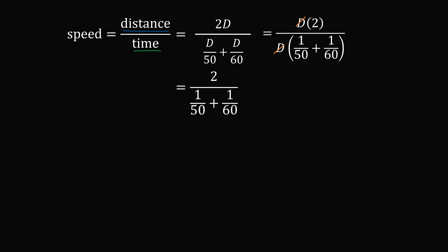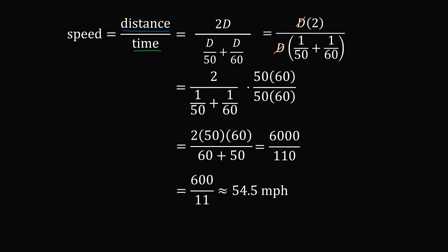There's a nice trick to eliminate the fractions in the denominator. We have 1 over 50 and 1 over 60, so we can multiply the numerator and denominator by 50 times 60. The denominator becomes 60 plus 50, and the numerator is 2 times 50 times 60. This simplifies to be 6,000 divided by 110, which is equal to 600 over 11, or approximately 54.5 miles per hour.